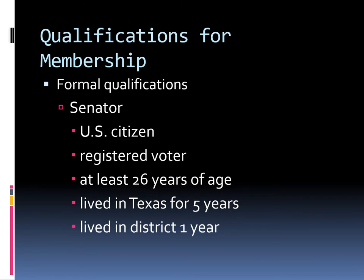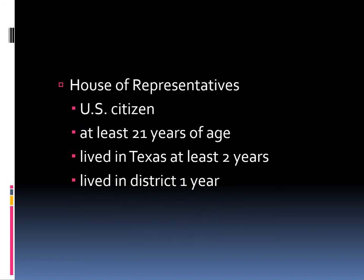There are certain qualifications for our legislators to be elected — both formal and informal. The formal qualifications are not that many. To be a Texas senator, you need to be a U.S. citizen, a registered voter, at least 26 years of age, have lived in Texas for at least five years, and lived in your district for at least one year. For the House of Representatives, again not many formal qualifications: you need to be a U.S. citizen, at least 21 years of age, have lived in Texas for at least two years, and lived in your district for at least one year.